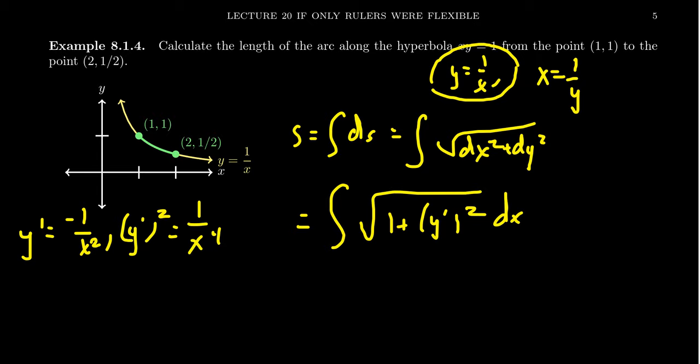And so for our arc length integral, s is going to equal the integral from x = 1 to x = 2, because we're going to integrate with respect to x, then we get the square root of 1 + 1/x⁴ dx.